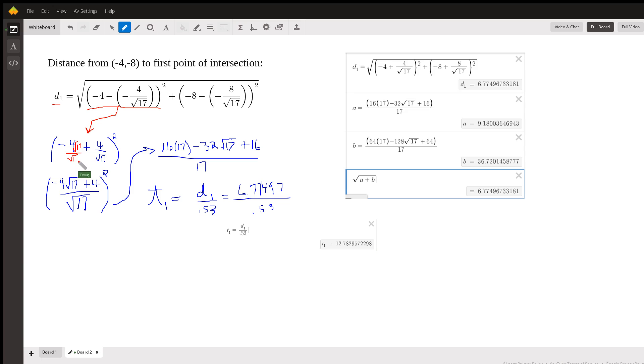And so that gives us (-4√17 + 4) over the common denominator. That thing squared: to square a binomial I square the first term, that's 16 times 17. I double the product of the two terms, so the product of the two terms is -16√17, doubled is -32√17. And plus square the second term. I square the √17, I get 17.